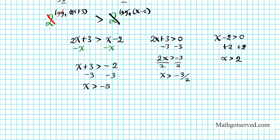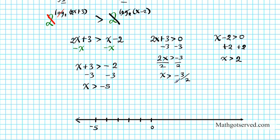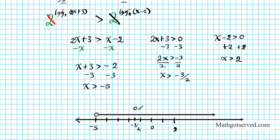So when we take the intersection of these three inequalities, that will be our solution. The easiest way is to use the number line. The three inequalities are: x > −5, x > −3/2, and x > 2. Graphing them on the number line, we look for where they all overlap.